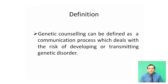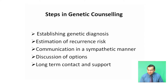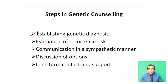There are five important steps in genetic counseling. The first one is establishing genetic diagnosis. The second step is estimation of recurrence risk, that is the recurrence of a particular genetic disorder.